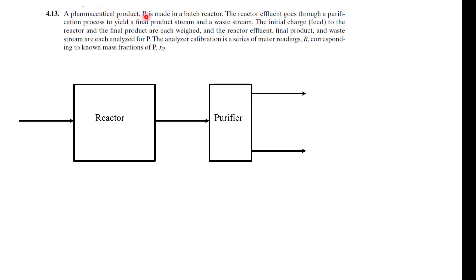What we have here is a pharmaceutical product made in a batch reactor. Reactor effluent goes through a purification process to yield a final product stream and a waste stream. The initial charge is fed to the reactor and final product are each weighed. So we have some feed, some stuff being produced, a purified product stream and a waste stream. This is the first step - you always want to try to draw your mass balance. And this is the first video on my channel that we're doing multiple reactors in a problem.